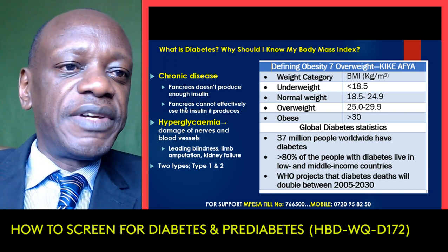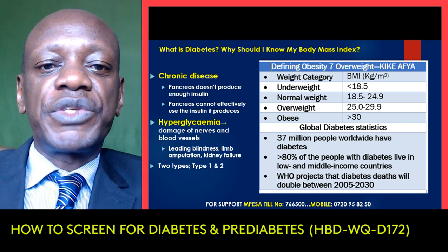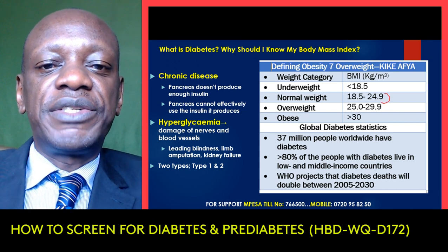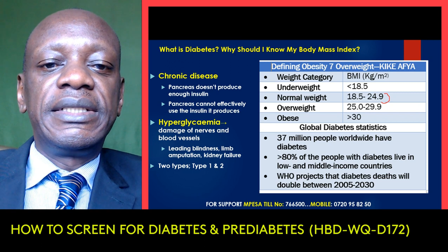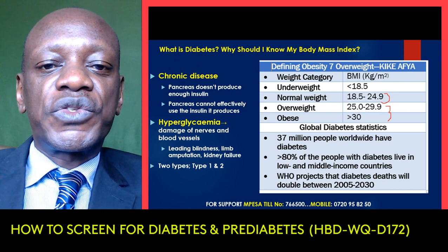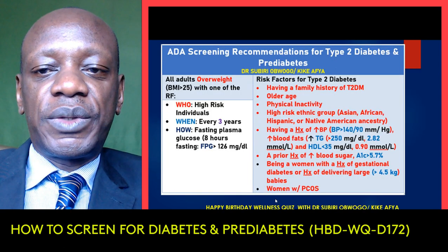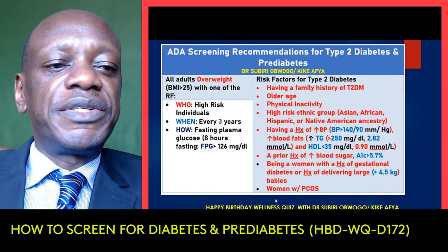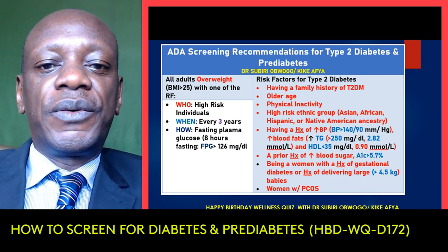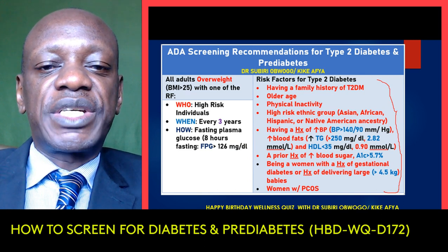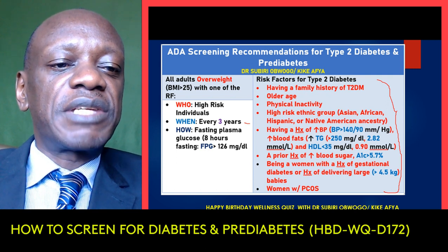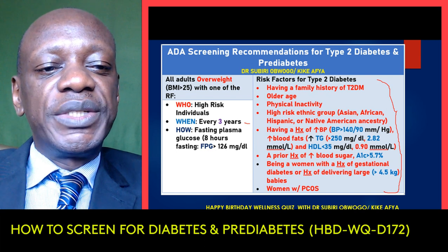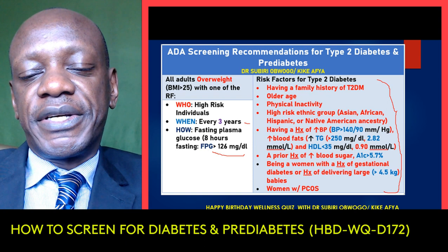One key feature of type 2 diabetes is actually weight. It's very important that you know your BMI or body mass index — it should be between 18 and 25. Anything above 25 increases your risk of getting type 2 diabetes. For screening, it's recommended that all adults with a BMI above 25 who have any one of the following risk factors should be screened using laboratory tests every three years. If you have a fasting plasma glucose — that is eight hours of overnight fasting, blood taken in the morning — of more than 126 mg per deciliter, you are considered diabetic, but this must be confirmed on a second occasion.